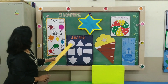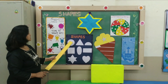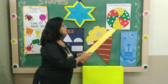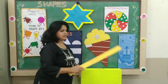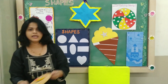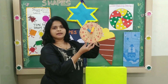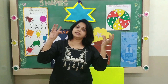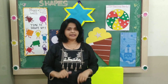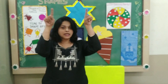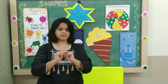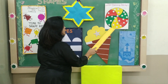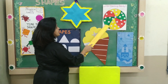See children, this is a circle shape. We see a ball in circle shape. We see a clock in circle shape. The wheels are in circle shape, isn't it? And the sun is also a circle shape. So circle has no sides.